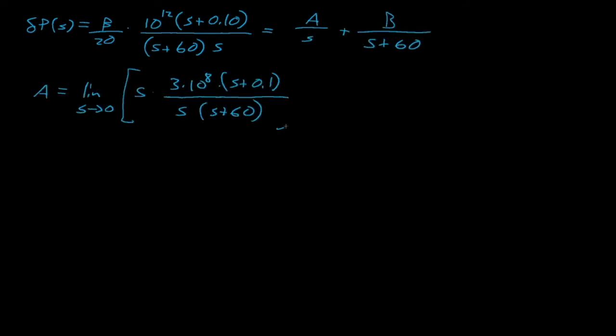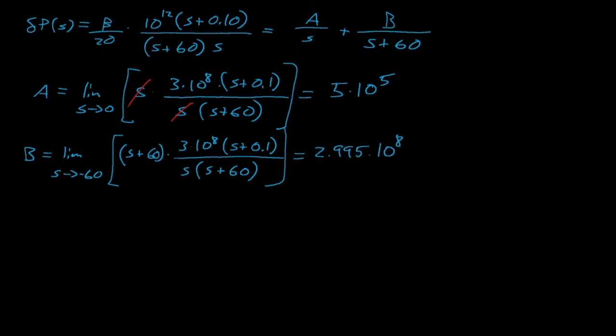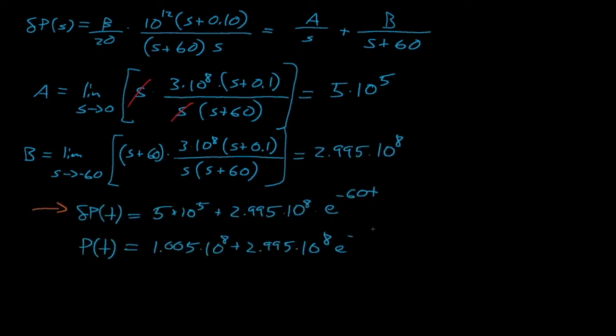Another option, which is actually not necessary for the stated goals of this problem, is to decompose our expression for delta p of s into partial fractions, and then to solve for the time domain expression for our power. From there we can take the limit of this expression as t approaches infinity and obtain the same result as we got using the final value theorem.